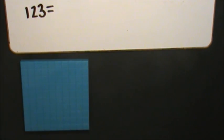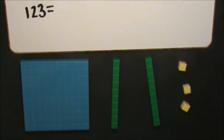First, I will represent 123 with the fewest number of base 10 blocks: 1 hundred, 2 tens, 3 ones. Then,